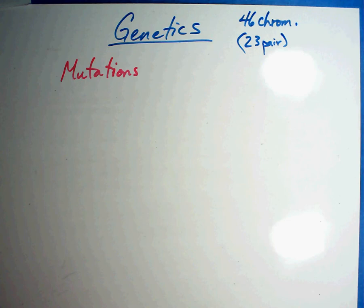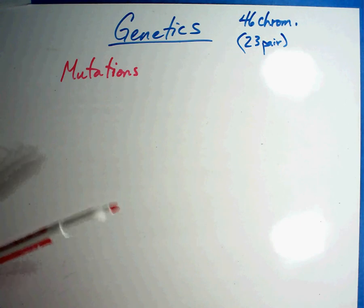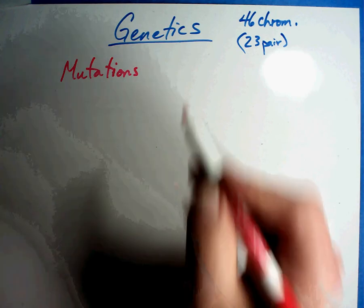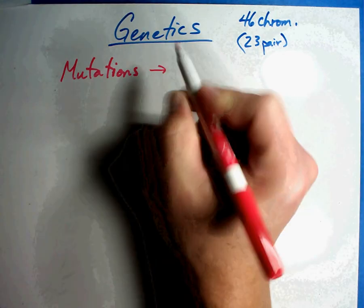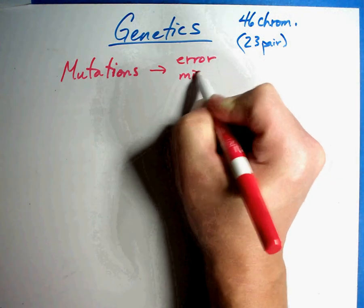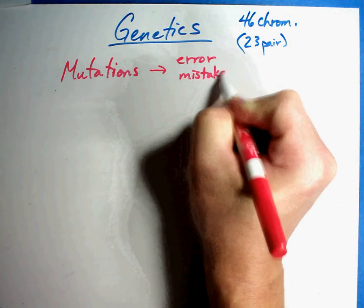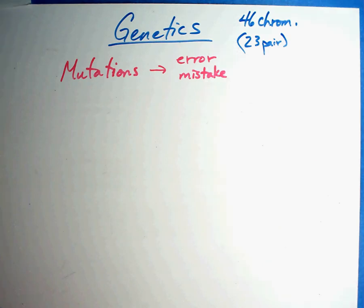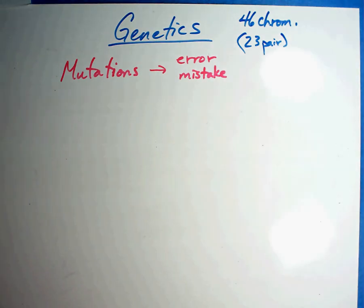In this last session of genetics, we're going to talk about something a little different — mutations. Sometimes in science fiction movies we get the wrong impression of what mutations are. A mutation is an error or a mistake that occurs. There are many mutations scientists believe happen that have really no effect on how a cell works, but then there are others that do have an effect.